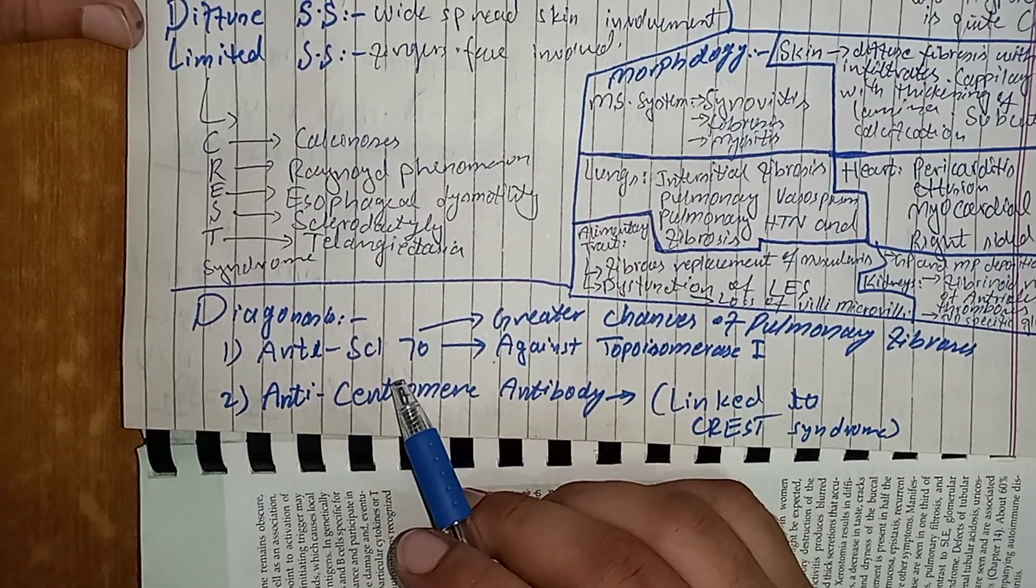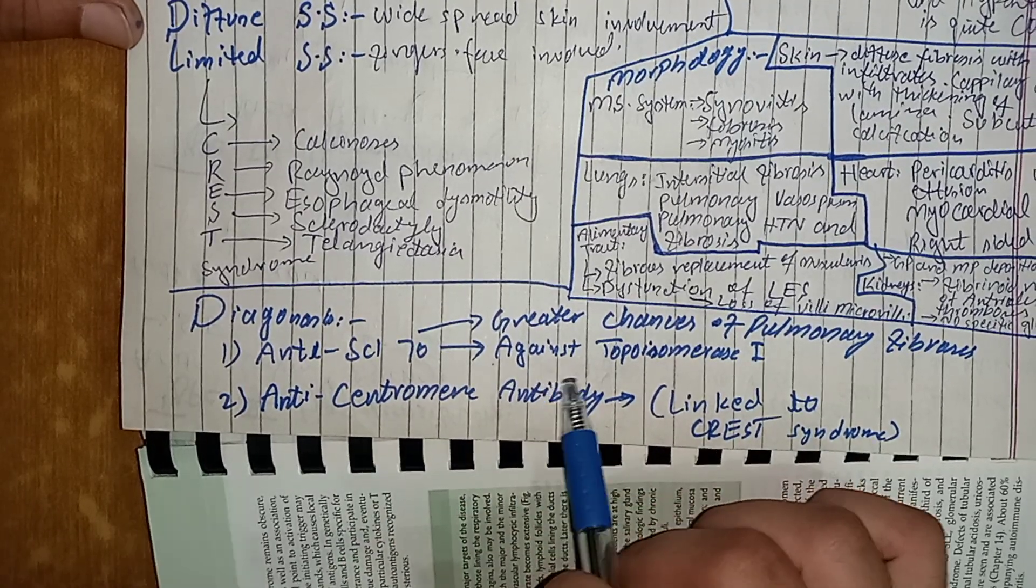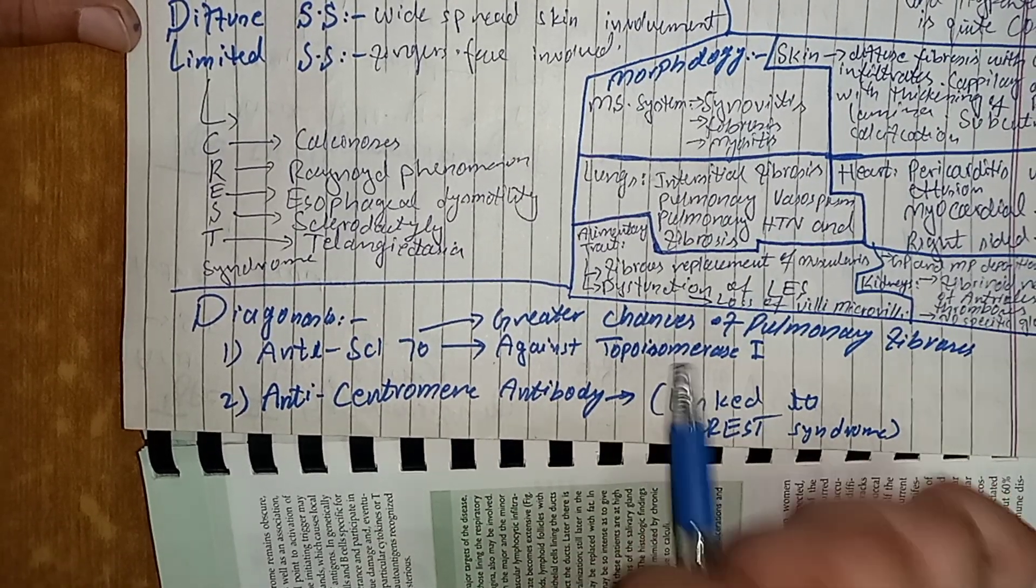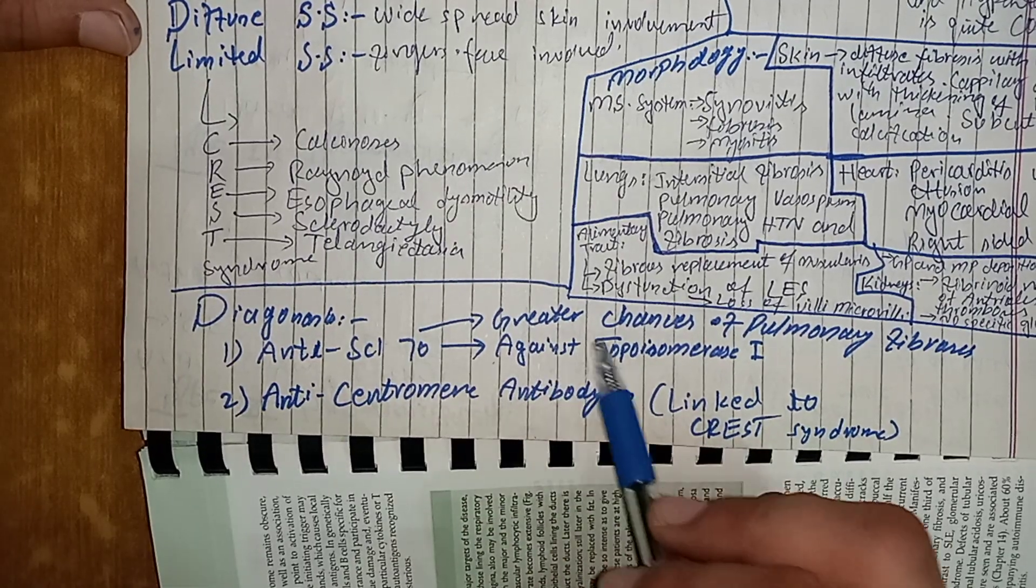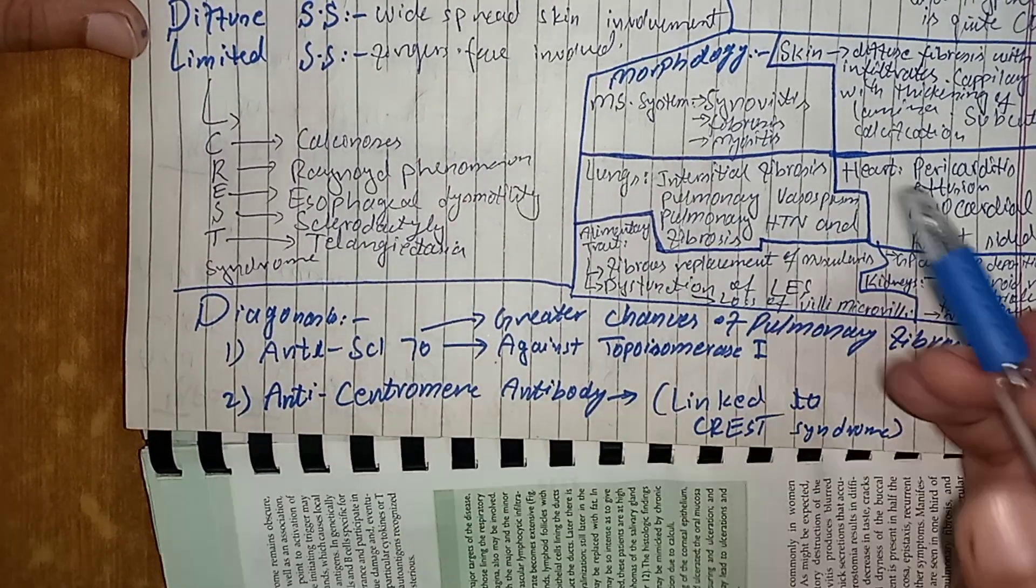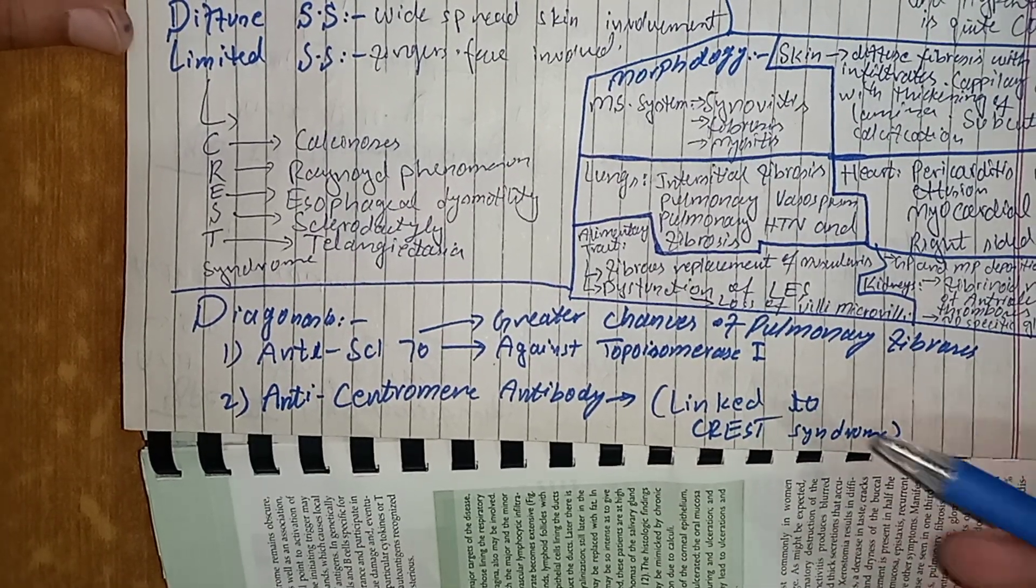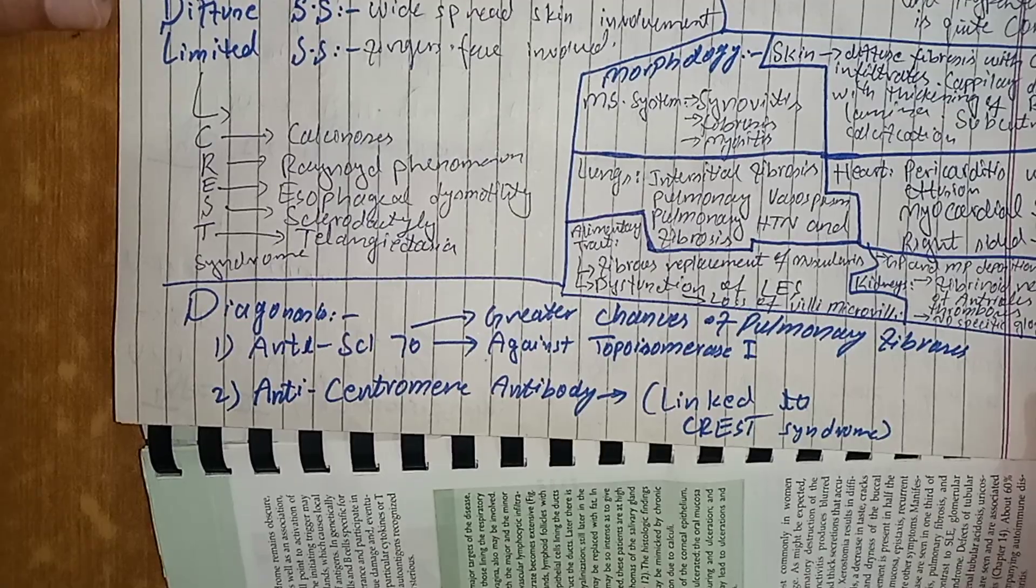These tests detect anti-nuclear antibodies which include anti-Scl-70 which is antibody against topoisomerase 1. And if this test is positive, there are greater chances of pulmonary fibrosis. And other is anti-centromere antibody. And if this test is positive, there is greater chances of the CREST syndrome. So, these two antibodies help to detect the systemic sclerosis.